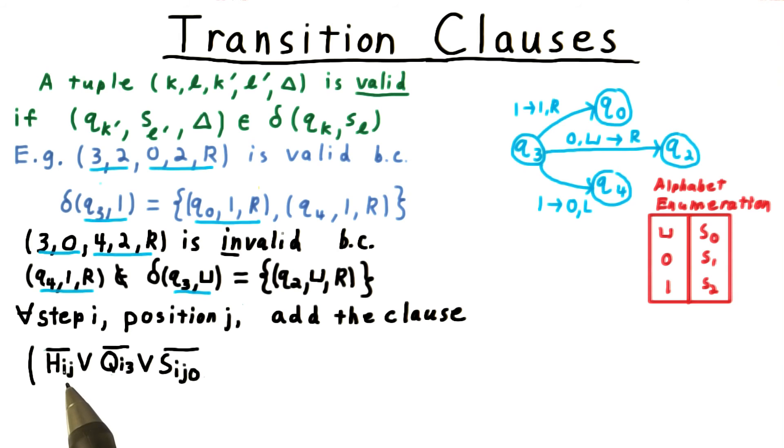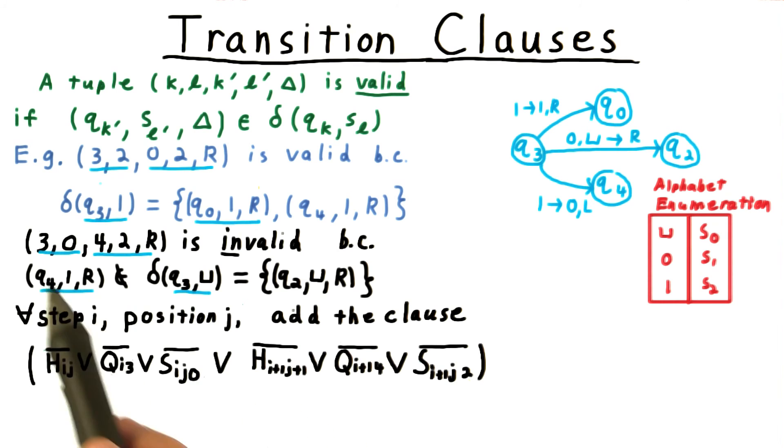If the head isn't in the position we're talking about, the state isn't q3, or the symbol being read isn't the blank symbol, then the clause is immediately satisfied. The clause can also be satisfied, if the machine behaves in any way that's different from what this particular invalid transition would cause to happen.